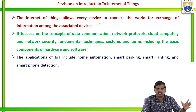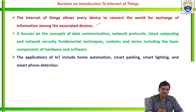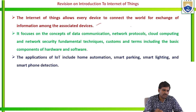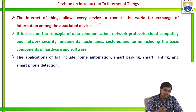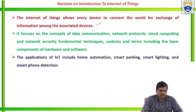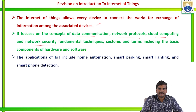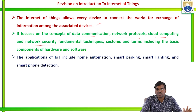The first line introduces the main point of Internet of Things: the Internet of Things allows every device to connect to the world with the help of the internet, enabling exchange of information among the associated devices.